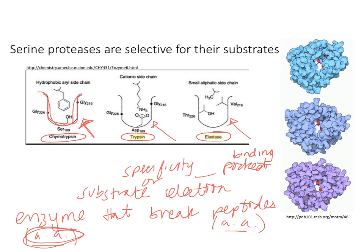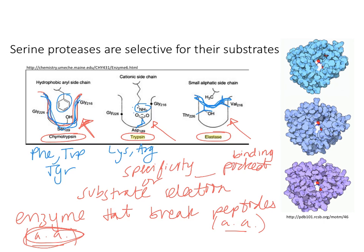What makes the three proteases different is what residue they select for on the substrate. Chymotrypsin's active site is wide and deep, so it selects for large aromatic residues: phenylalanine, tryptophan, and tyrosine. Trypsin has an aspartic acid in its binding site, so it selects for positively charged residues — lysine and arginine — through a salt bridge. Elastase has a very shallow pocket, so it selects only for alanine.